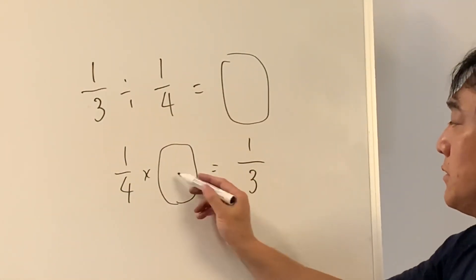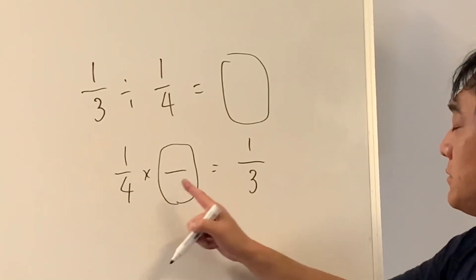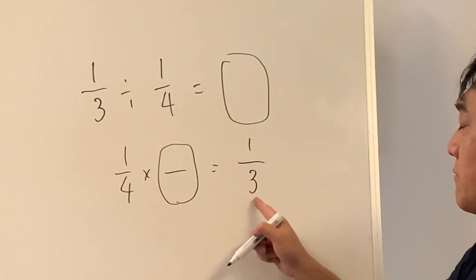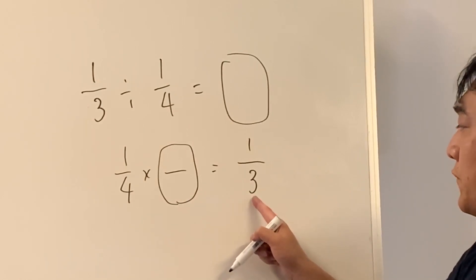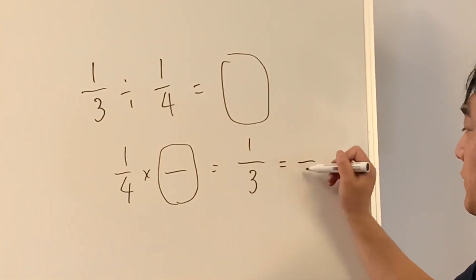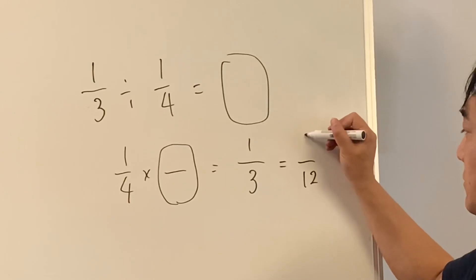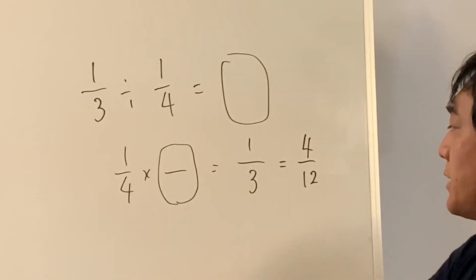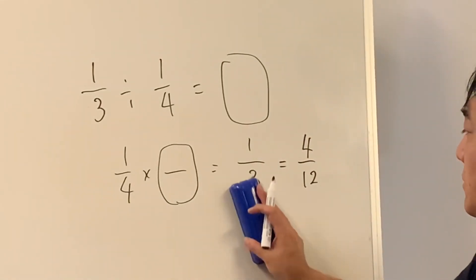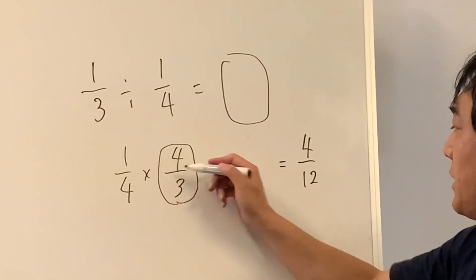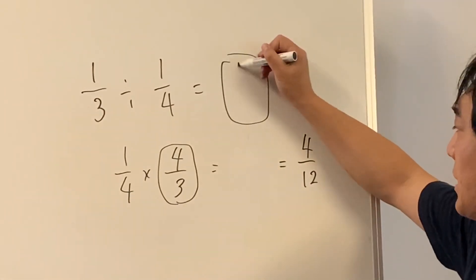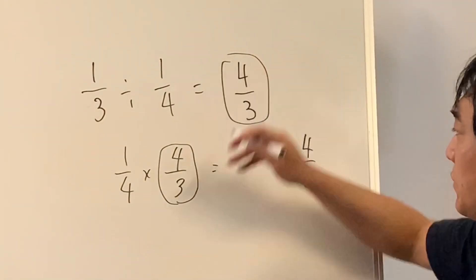Right? To find this number, well I cannot make three, but I can make twelve. If I change the equivalent fraction, right? Four times three is twelve. One times four is four. The answer should be four-thirds.